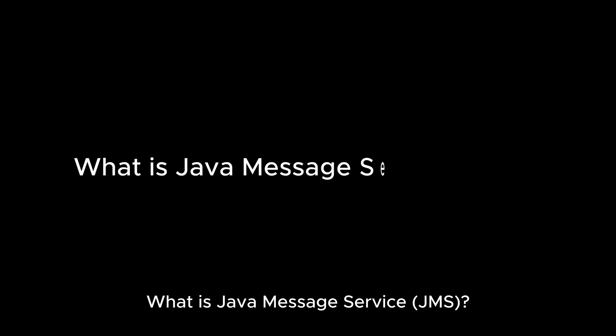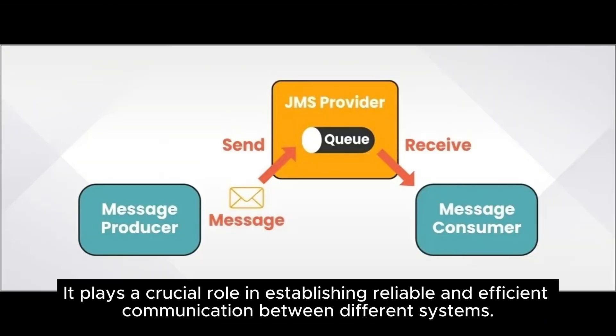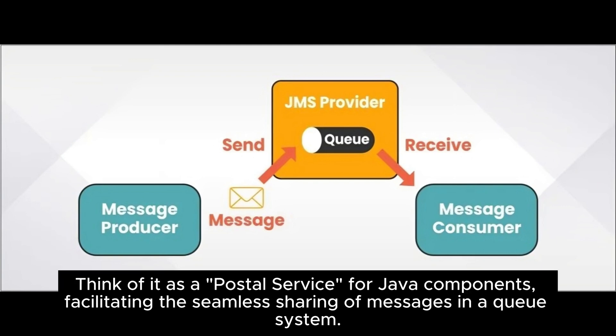What is Java Message Service, JMS? JMS, or Java Message Service, is an API designed for enterprise messaging products. It plays a crucial role in establishing reliable and efficient communication between different systems. Think of it as a postal service for Java components, facilitating the seamless sharing of messages in a queue system.